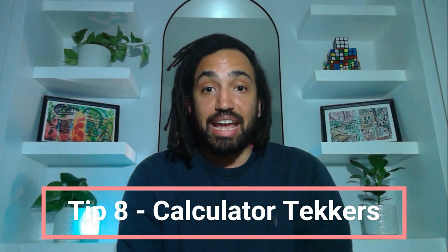Tip number eight, calculator. First off, make sure you bring spare batteries into your exam. You don't want them running out on you. That would be absolute disaster. Secondly, if you have the Casio CG50, then lucky you make sure you use it to your advantage. Know all of the features. This video is not going to be long enough for me to go over all of the intricacies and how great the calculator is. I'll save that for another time and I will link it. But you should master that calculator and use it to your advantage.